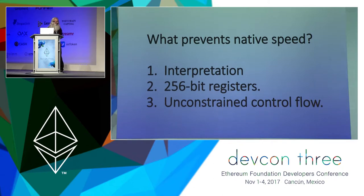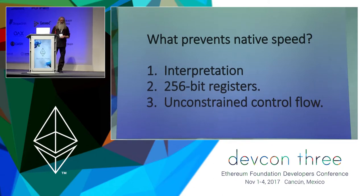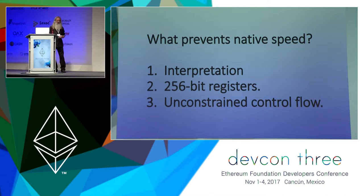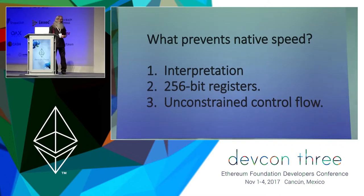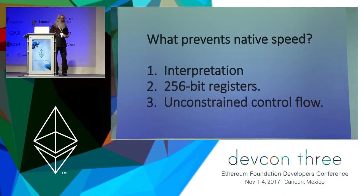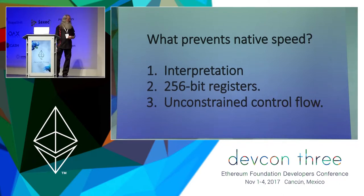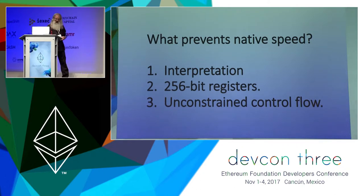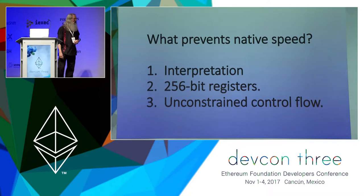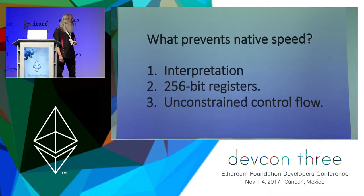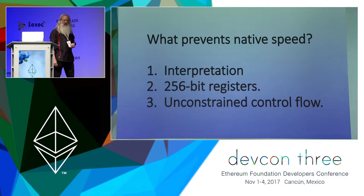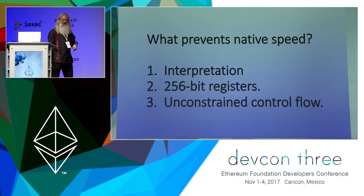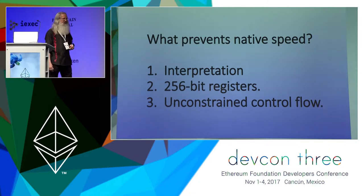So what keeps those interpreters from reaching native speed? The first answer is they're interpreters, so they've got that overhead. You can work hard and reduce the overhead, but generally you can't do better than about 3 or 4 to 1 compared to native code. For our particular interpreter, the 256-bit registers slow us down because real hardware has 32 and 64-bit registers.